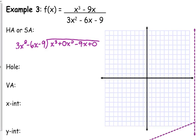x cubed divided by 3x squared, that's one of those not nice and pretty ones, that gives us 1/3 x. 1/3 times negative 6 is negative 2x squared, 1/3 times negative 9 is negative 3x. When we subtract, we get 2x squared minus 6x plus 0, and 2x squared divided by 3x squared is 2/3.